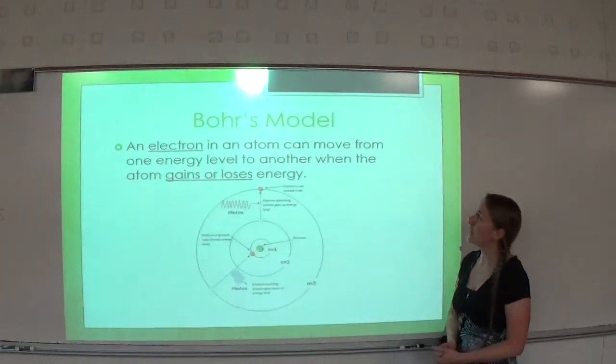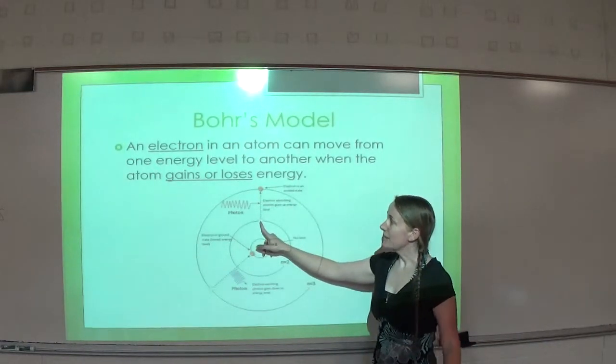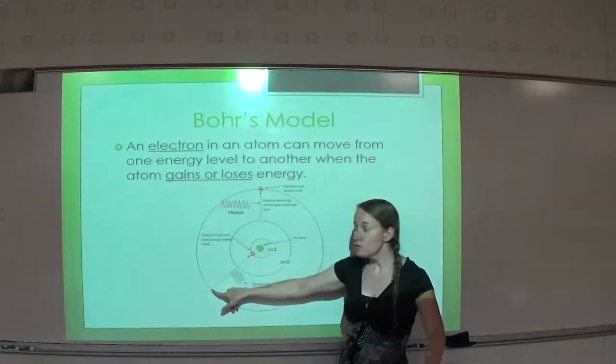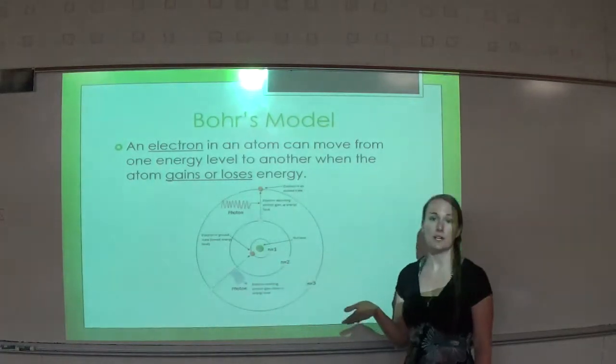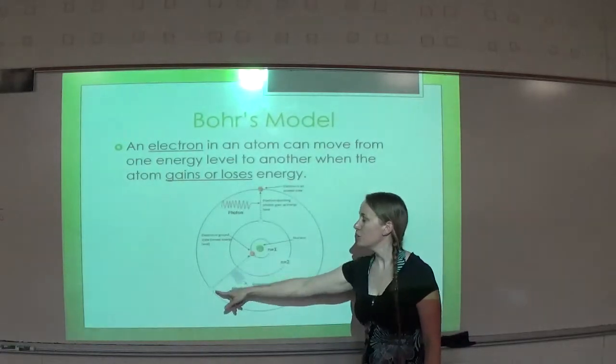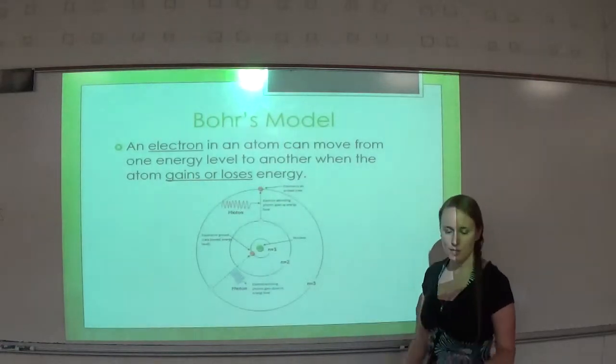An electron in an atom can move from one energy level to another when it gains or loses energy. I just gave you an example of where it can gain energy and jump up an energy level, but it could also lose energy and fall to a lower energy level. It doesn't have to be one at a time. If you notice here, it's dropped two energy levels. It's all about how much energy does that electron have.